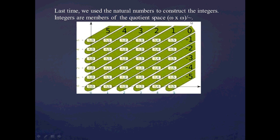Graphically, we had the grid associated with the Cartesian product omega times omega. When we set up that equivalence relation, we were able to partition this grid into equivalence classes. For example, we said the integer 3 is the equivalence class of the ordered pair (3, 0), which includes ordered pairs like (3, 0), (4, 2), (4, 1), (5, 2), and so on.